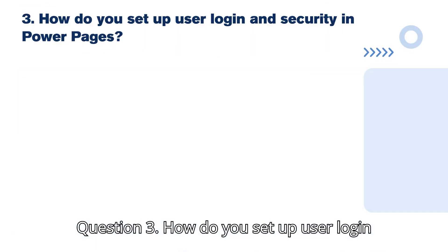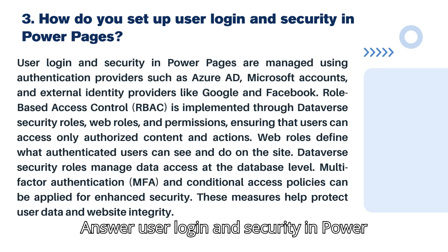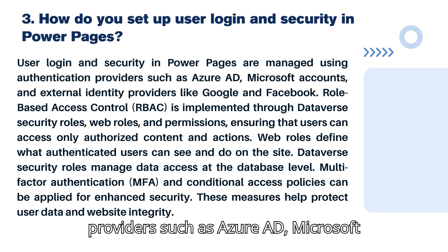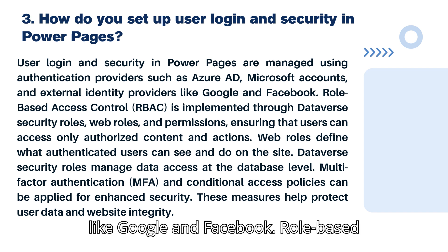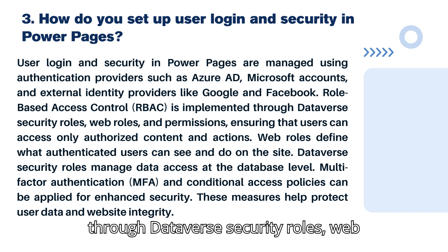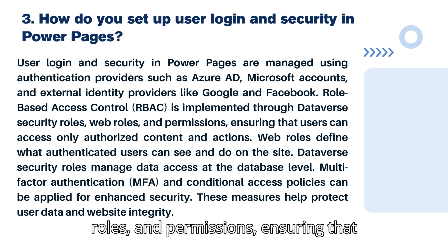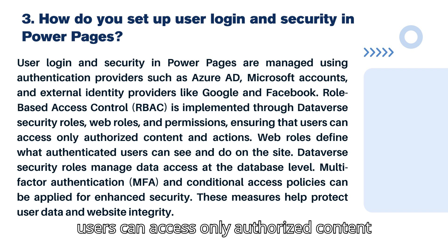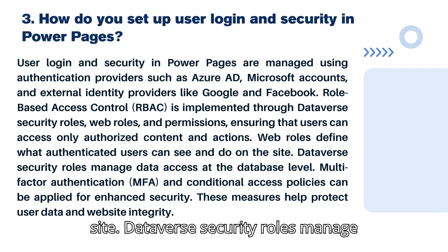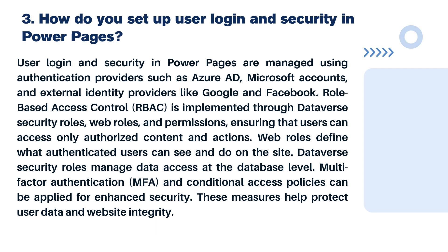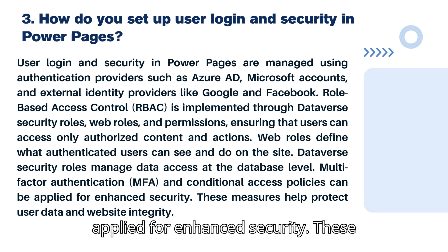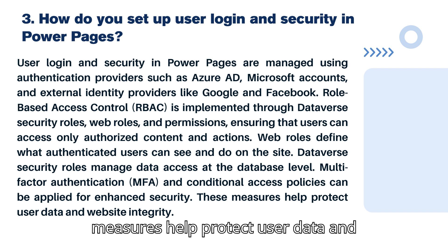Question 3: How do you set up user login and security in Power Pages? User login and security are managed using authentication providers such as Azure AD, Microsoft accounts, and external identity providers like Google and Facebook. Role-based access control (RBAC) is implemented through Dataverse security roles, web roles, and permissions, ensuring users can access only authorized content. Web roles define what authenticated users can see and do. Dataverse security roles manage data access at the database level. Multi-factor authentication (MFA) and conditional access policies can be applied for enhanced security.